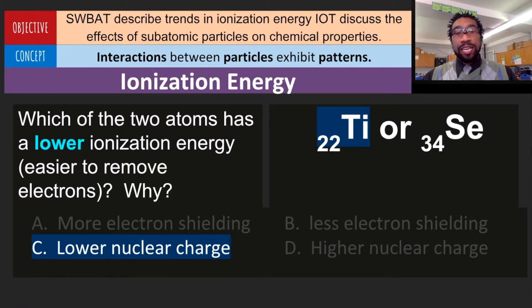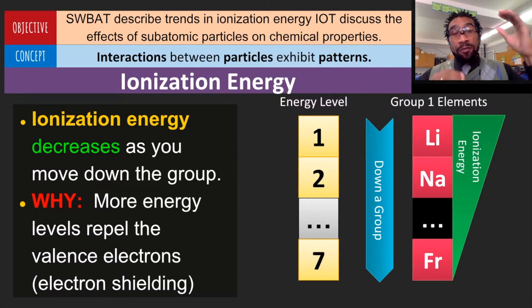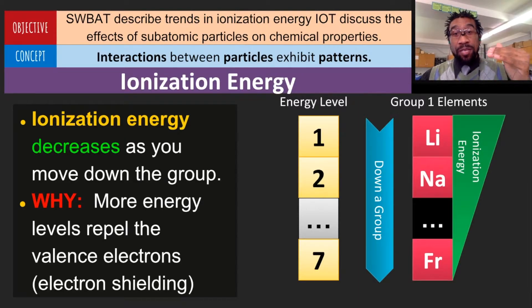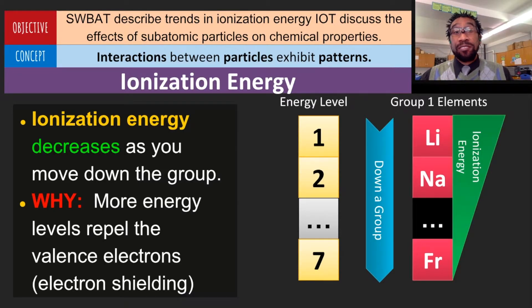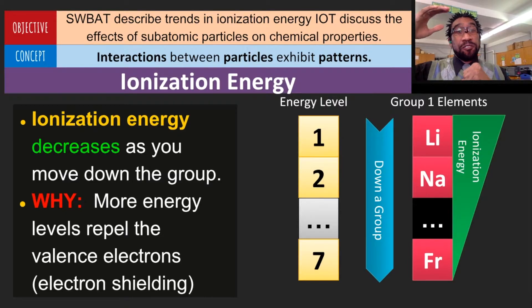Let's move on and talk about the next trend in ionization energy. Ionization energy can decrease as you go down the periodic table or down the group. Why? Well, there's this thing called electron shielding. As you go down the periodic table, you're increasing the number of energy levels, which creates an electron shield — the shield becomes thicker. If you were on the fifth row of the periodic table, an atom actually has four energy levels that act as shields. These shields push or repel electrons away from the atom. Therefore, as you go down the group, you have more electrons that separate the valence electrons from the nucleus, and it's easier to push them off onto another atom.